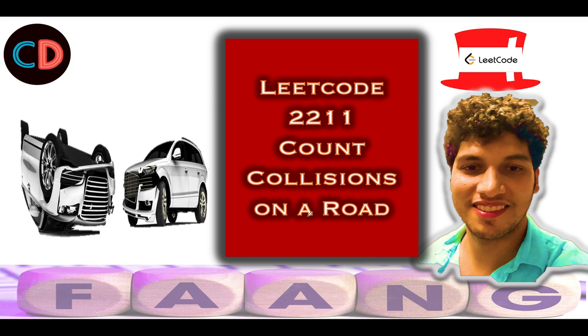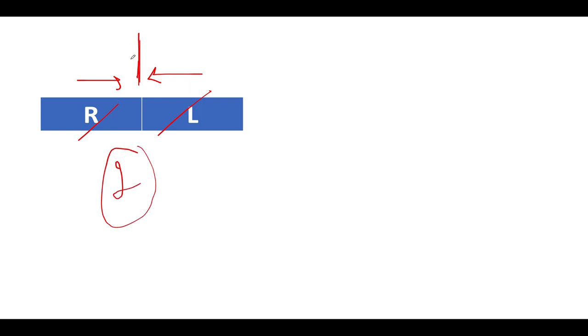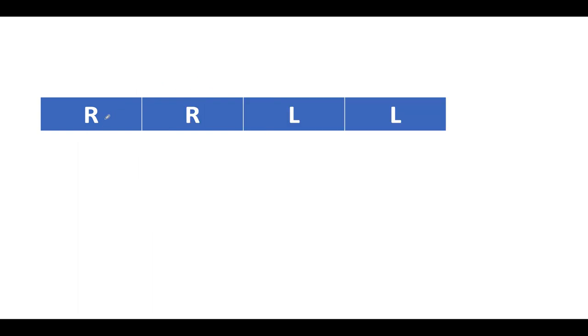LeetCode 2211 — Count Collisions on Road. Let's take a very simple example. We have two cars: one moving right and one moving left. Since both are moving in opposite directions, the total score equals the number of cars — one plus one — contributing one score each as they collide.